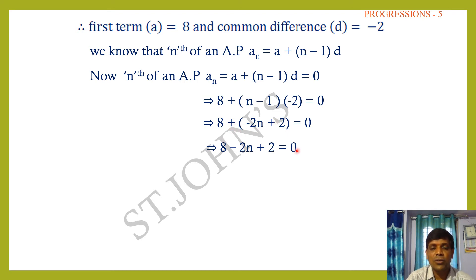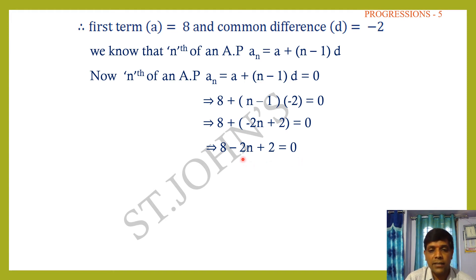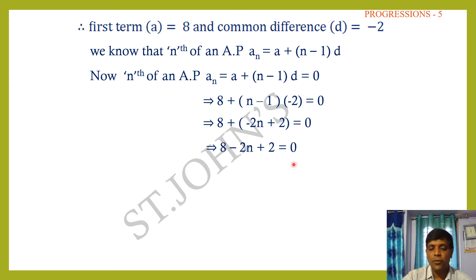The condition is: 9th term = 6 times 2nd term, so a + 8d = 6(a + d). Also, 5th term = 22 means a + 4d = 22.